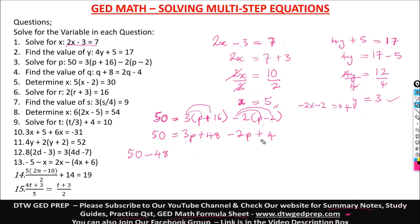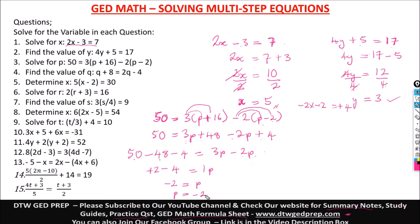Taking positive 48 to this side becomes negative 48, and taking positive 4 to the other side becomes negative 4. We have 50 minus 48 minus 4 on the left, and 3p minus 2p on the right. 50 minus 48 is 2, then 2 minus 4 equals negative 2. And 3p minus 2p is 1p, which we just write as p. So negative 2 equals p, which is the same as p equals negative 2.